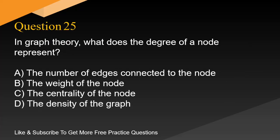Question 25. In graph theory, what does the degree of a node represent? A. The number of edges connected to the node. B. The weight of the node. C. The centrality of the node. D. The density of the graph.